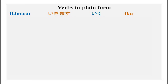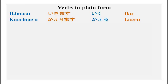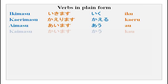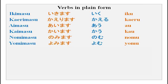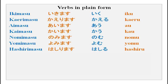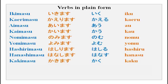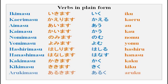Here are group 1 verbs in plain form: ikimasu → iku; kaerimasu → kaeru; aimasu → au; kaimasu → kau; nomimasu → nomu; yomimasu → yomu; hashirimasu → hashiru; hanashimasu → hanasu; kakimasu → kaku; kikimasu → kiku; arukimasu → aruku. From now on we will also cover the exceptions for group 1, introduced gradually over time so they are easier to remember.